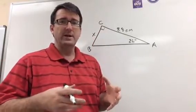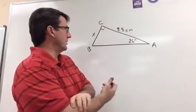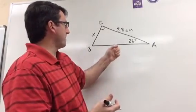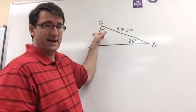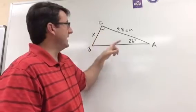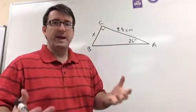This is the angle we're given. We know the opposite side we're trying to find, and we know the adjacent side. So we're going to use tangent, which is opposite over adjacent.